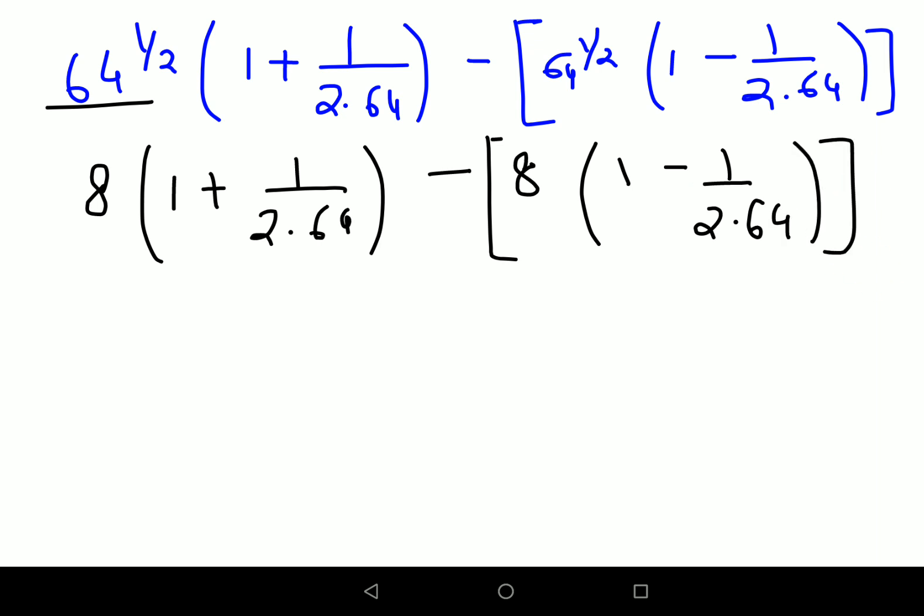Please understand, students, a lot of students make the mistake of solving this. You should not be doing this mistake. It's very easy if you multiply this 8 inside. When you multiply 8 with 1, you get 8, and when you multiply 8 here, your 8 in the denominator is cancelling. I have 8 plus 8/(2×64), then minus (8 minus 8/(2×64)). Before I forget, students, if you really like the way I'm explaining, please go ahead and hit the like button.